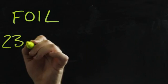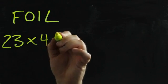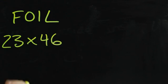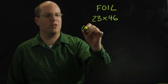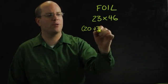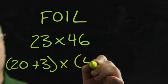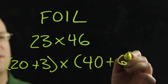So let's say I was multiplying 23 times 46. The first thing I'm going to do is break these up into their expanded notation. So 20 plus 3 times 40 plus 6.